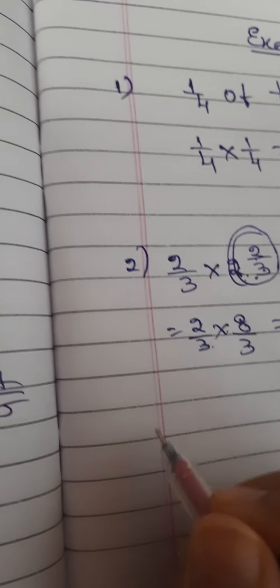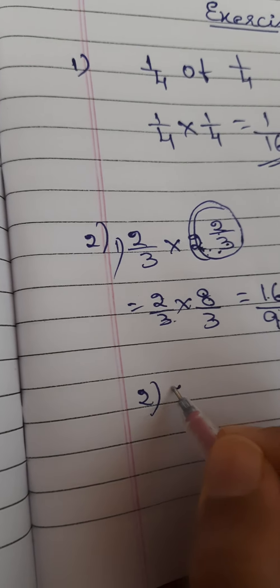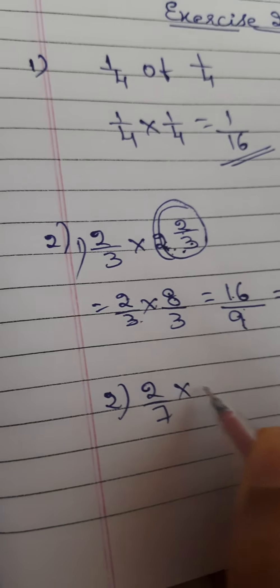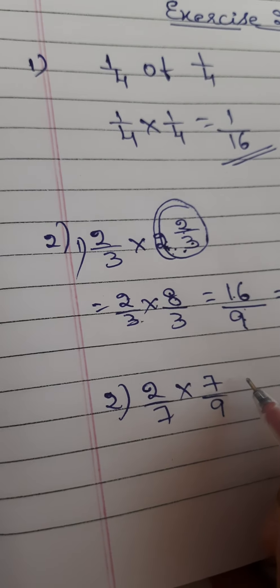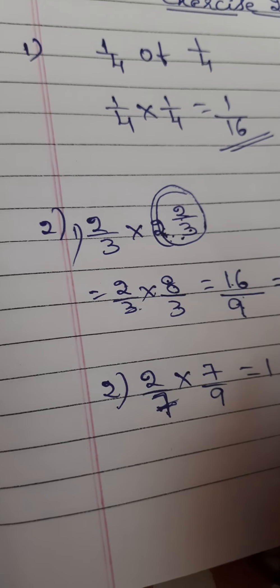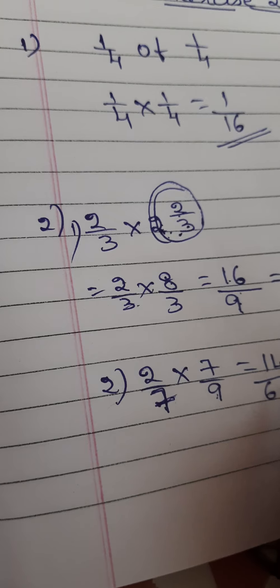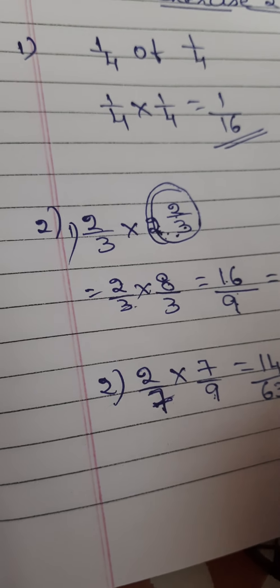Now suppose I am showing the second problem also. 2/7 × 7/9. 7 twos are how much, students? 14. Divided by 7 × 9, how much? 63.